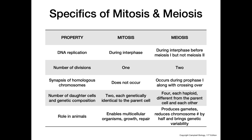Regarding the number of daughter cells and genetic composition: in mitosis you get two daughter cells, and both of those daughter cells are not only identical to each other, but also identical to the parent cell. In meiosis, however, we have four haploid daughter cells that are each genetically unique from one another, as well as genetically unique from the parent cell.